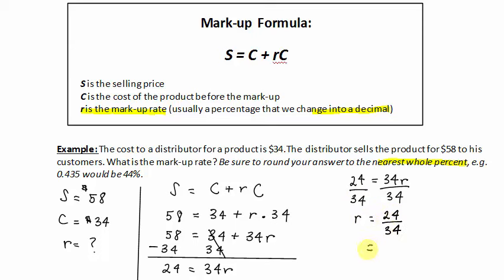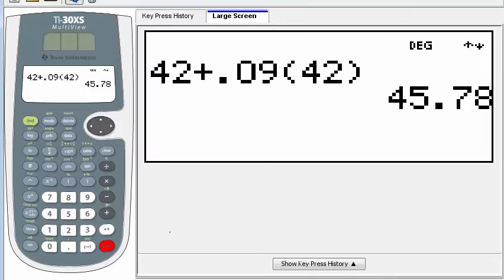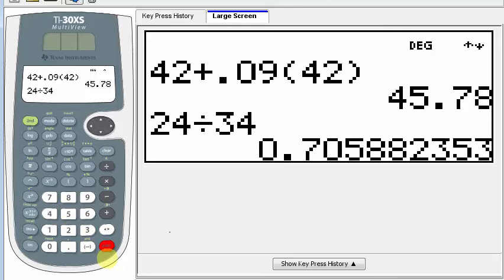Now this doesn't look much like a percentage at all, right? So we're going to go to our calculator and get a decimal representation. 24 divided by 34. And we get 0.70588. But then we'll go ahead and round to three decimal places. So the 8 makes the 5 round up to 6. So 0.706.